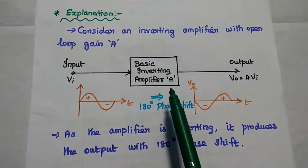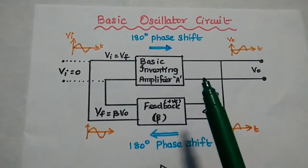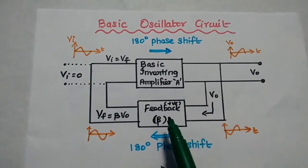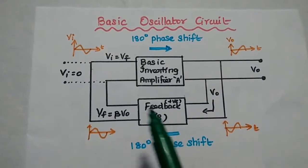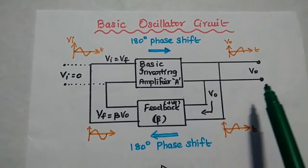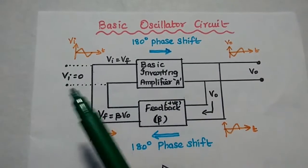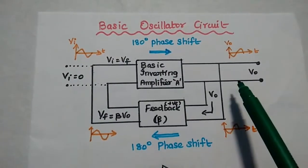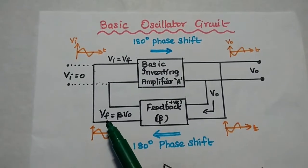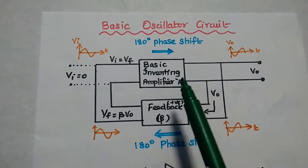We are going to use this inverting amplifier in our oscillator circuit. This is the basic oscillator circuit. It consists of a basic inverting amplifier with gain A and a positive feedback with gain beta. There is no input given to this circuit. The output voltage from this amplifier is obtained due to the DC supply voltage, not from an input signal.